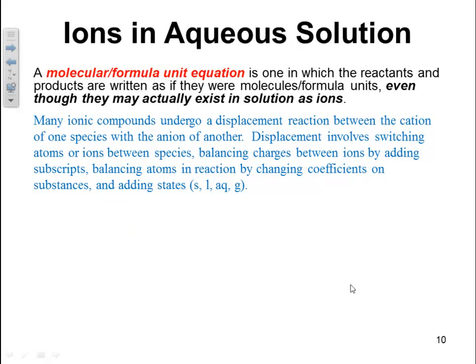Many ionic compounds undergo a displacement reaction between the cation of one species with the anion of another. Displacement involves switching atoms or ions between species, balancing the charges between ions by adding subscripts, then balancing the atoms in the reaction by changing coefficients on substances, and adding the states — solid, liquid, aqueous, or gas.